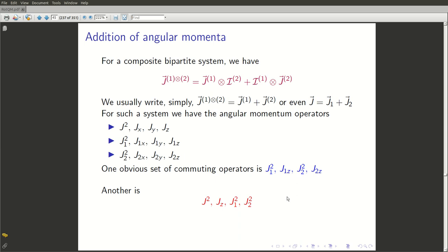Now, that j² and jz commute is trivial, but the fact that jz commutes with j1 square, or jz commutes with j1 square, may not be that obvious. In order to understand this result, we need to take a look at an identity which is going to be very useful in what is to come. It is also very useful in other branches of physics like condensed matter physics, wherever you talk about composing angular momenta or spins.